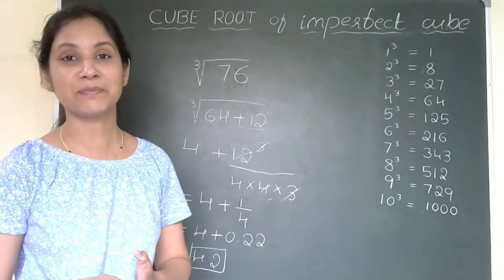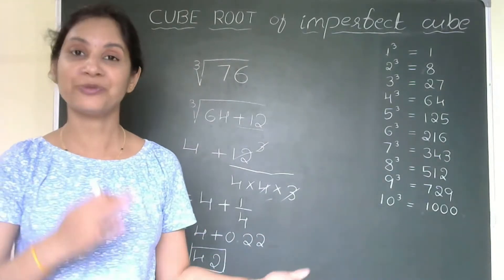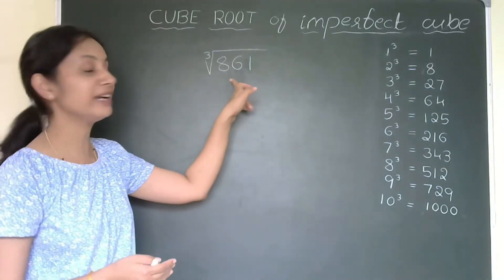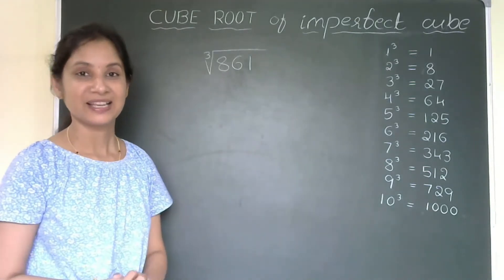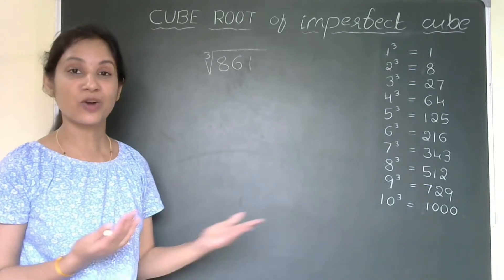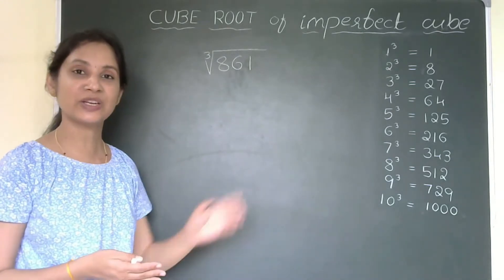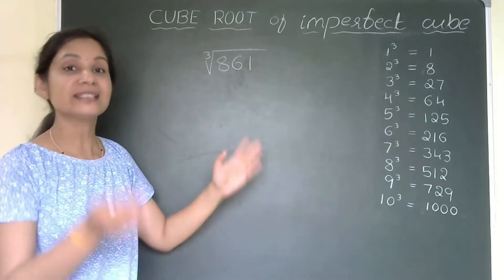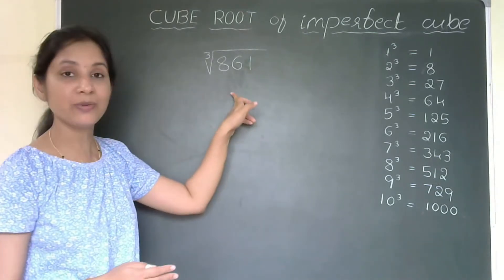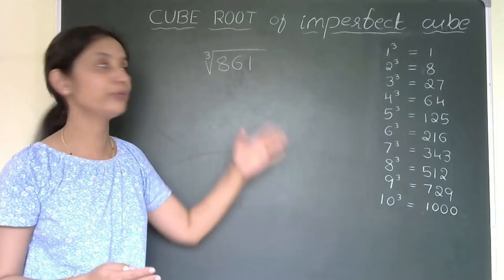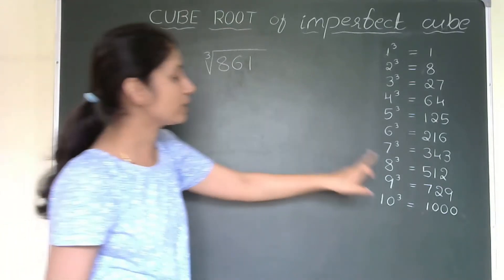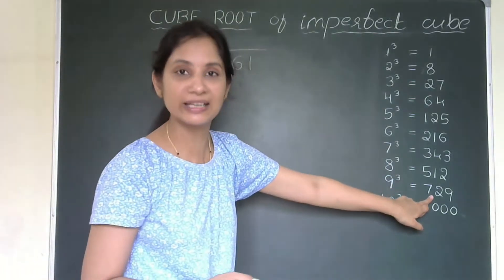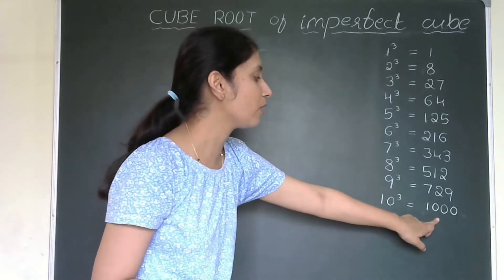Let us go for one more example and then you will get to know how it works. I am considering here 861. So, in order to find the answer, what will be the first step? Yes, as we know we need to split this number and write it in such a way that we should have the nearest perfect cube for this number. So, what it is?